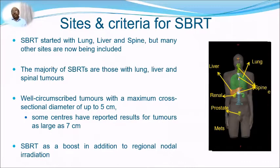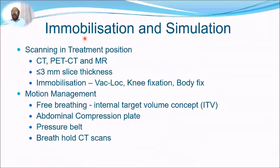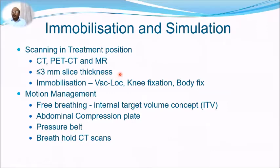For immobilization and simulation, a CT scan is performed as usual, but PET-CT and MRI can be done if required and fused with CT to define the tumor volume. CT slice thickness should be less than or equal to 3 mm, since we are working with very small tumors. For immobilization, a Bodyfix, knee fixation, or similar device can be used to keep the patient in position during treatment.